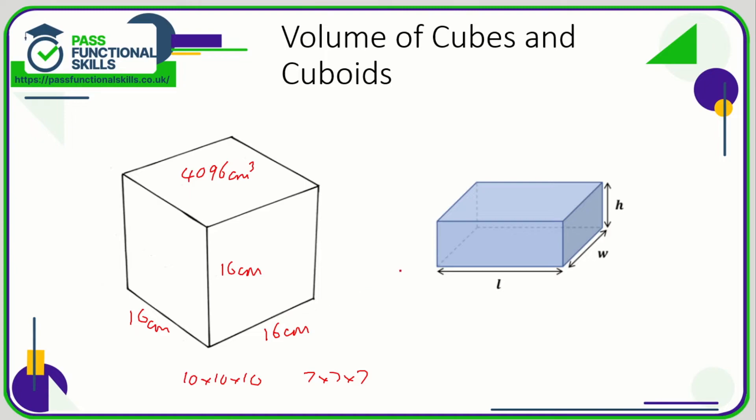Now for a cuboid, the formula for the volume of a cuboid is the length times the width times the height. So if we have a cuboid 10 centimeters, 6 centimeters, and 4 centimeters, then our calculation is 10 times 6 times 4, which is 240 cubic centimeters.